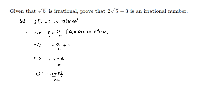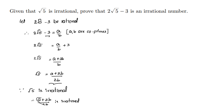So, root 5 is equal to A plus 3B by 2B. Now, since root 5 is irrational, A plus 3B by 2B is irrational. Therefore, 2 root 5 minus 3 is irrational.